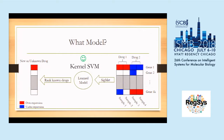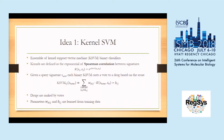Our first idea is to use the kernel support vector machine to do multi-way classification. A kernel SVM is an example of binary classifiers, and the kernel functions are defined as the exponential of Spearman correlation between signatures. We use Spearman correlation because it is popular, easy to calculate, effective, and its performance is good. Given a query signature, each binary classifier casts a vote towards a drug based on the scoring function. The W and B parameters are learnable from the training data, and after learning the model, you can rank drugs by collecting votes from all binary classifiers.